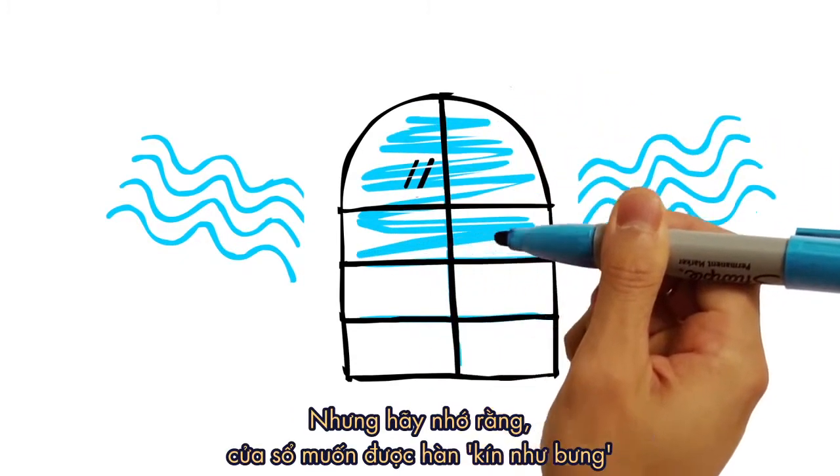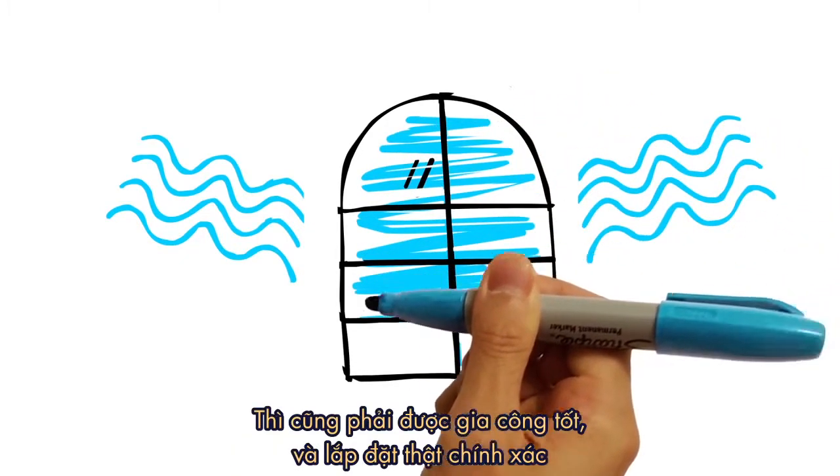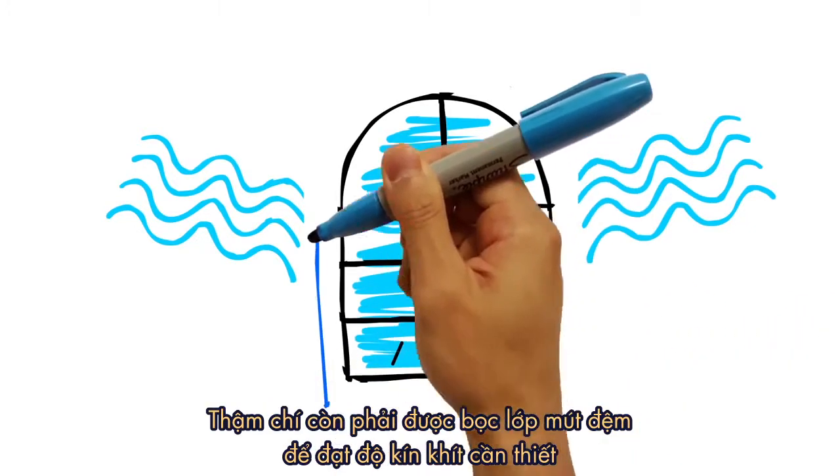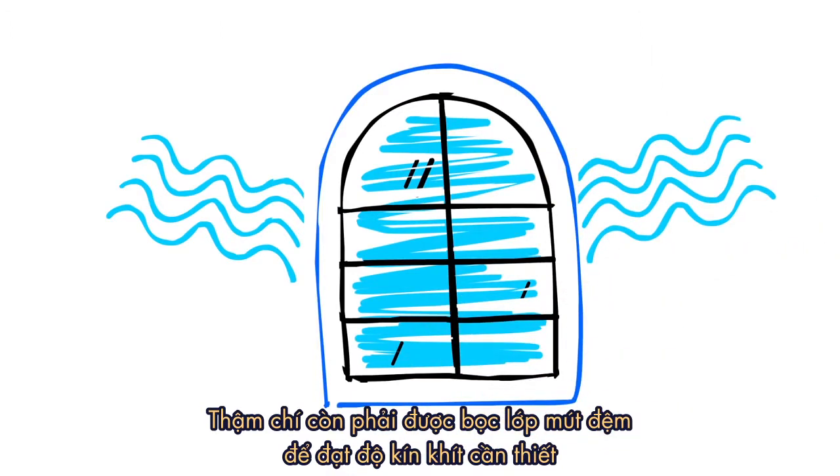But remember, for a window to be airtight, it must first be well constructed and properly installed, including quality weather stripping for an extra tight seal and added efficiency.